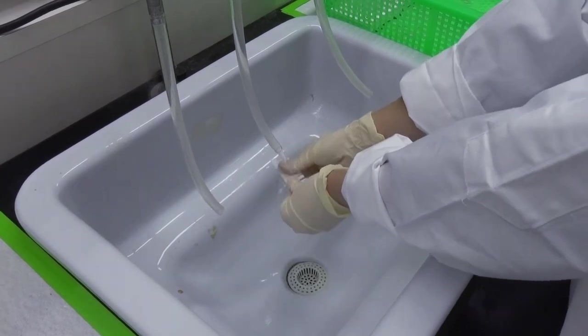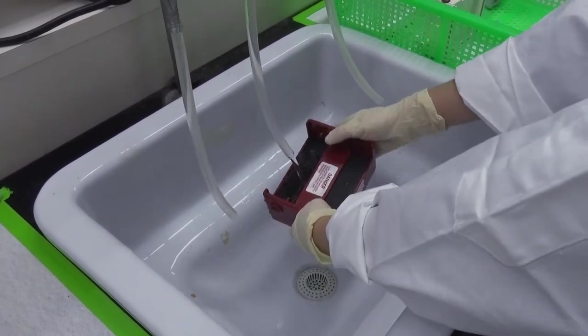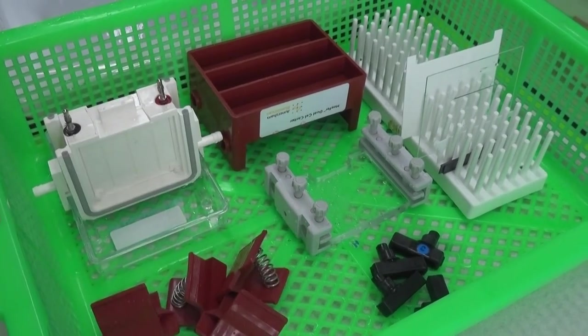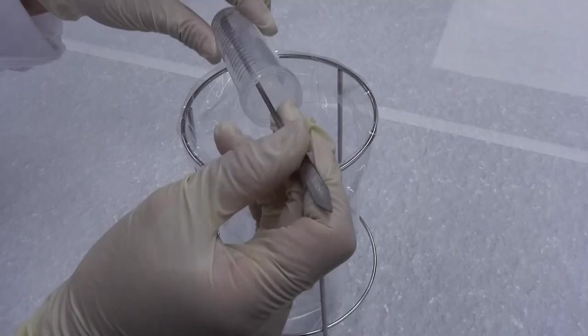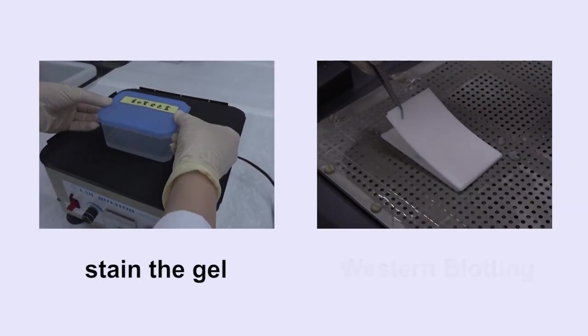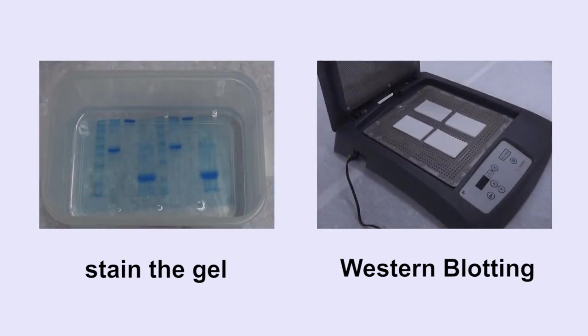Take advantage of the waiting time and wash all the parts and components just used. Wipe and leave them at a well-ventilated area to dry. In order to avoid mold growth or rust, gels should be disposed at designated places. Next, we may stain the gel or carry out Western blotting. Please continue watching the demonstration videos for these lab techniques.